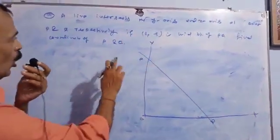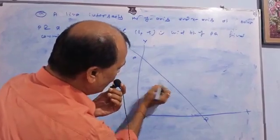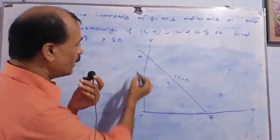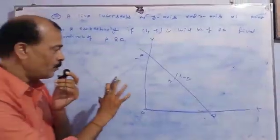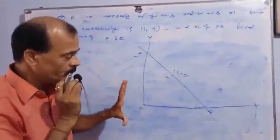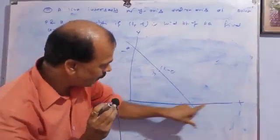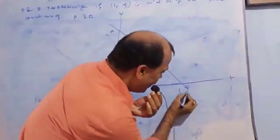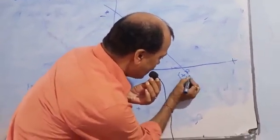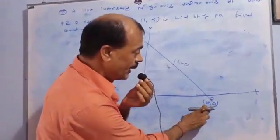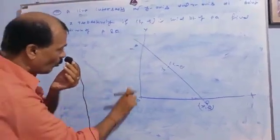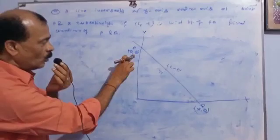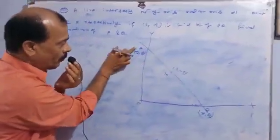Now we are given the midpoint of PQ. Suppose M is the midpoint, and the midpoint given is (2, -5). We have to get the coordinates of P and Q. As in the previous video, I told you that any line which cuts the x-axis has its ordinate become 0 — the second coordinate is 0. So the coordinate of Q becomes (x, 0). And the point which lies on the y-axis has its abscissa 0, so the first coordinate is 0 and the second is y.